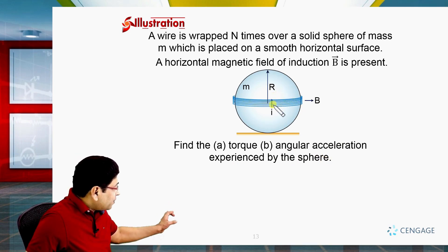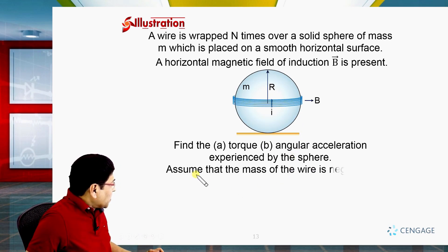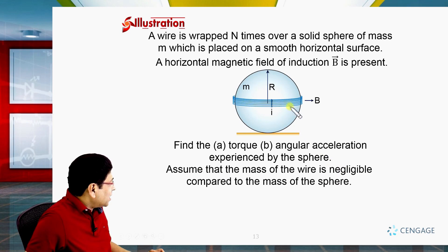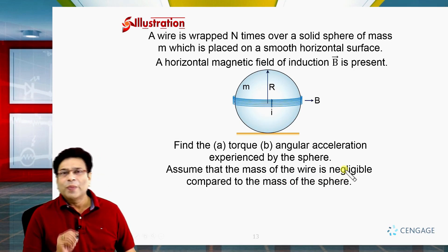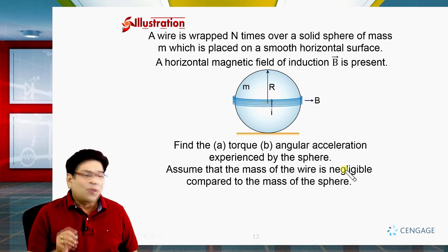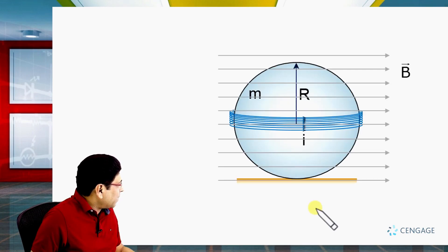We have to understand the torque of this sphere and the angular acceleration. We are given that the mass of the wire is negligible in comparison to the mass of the sphere. Let us place the diagram to the next phase and analyze this situation in detail.